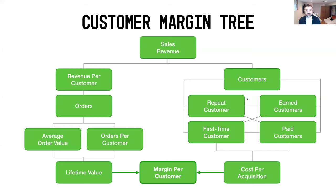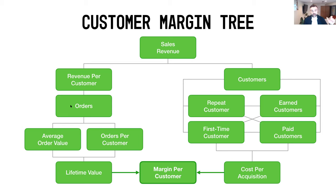The customer margin tree starts at the top with your sales revenue. Going down the left-hand side, it breaks into revenue per customer and number of customers. On the revenue per customer side, you have orders — closely connected to your order margin tree and product margin tree — along with average order value and orders per customer. Increasing orders per customer drives more revenue per customer and ultimately more sales revenue.